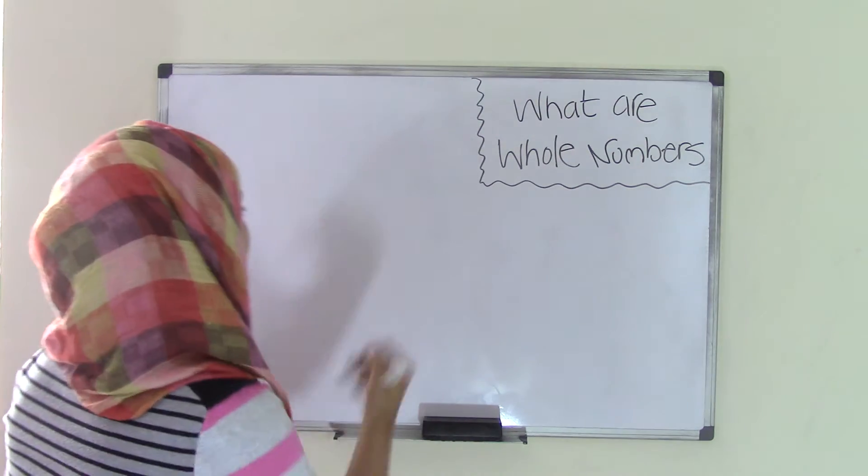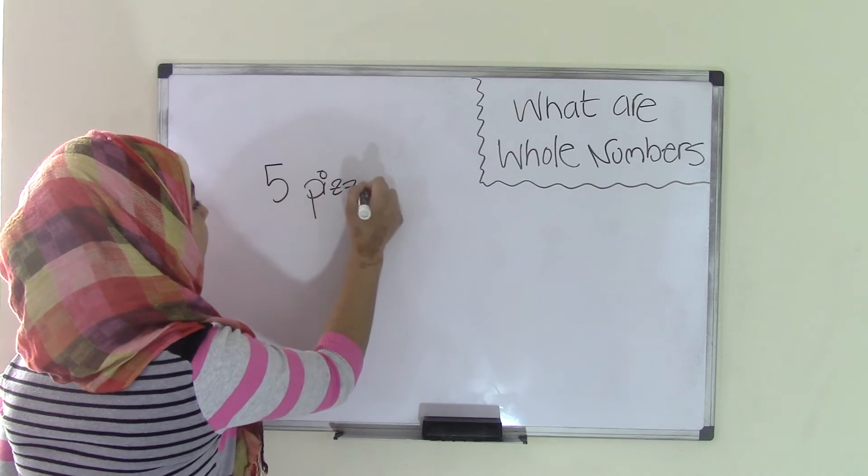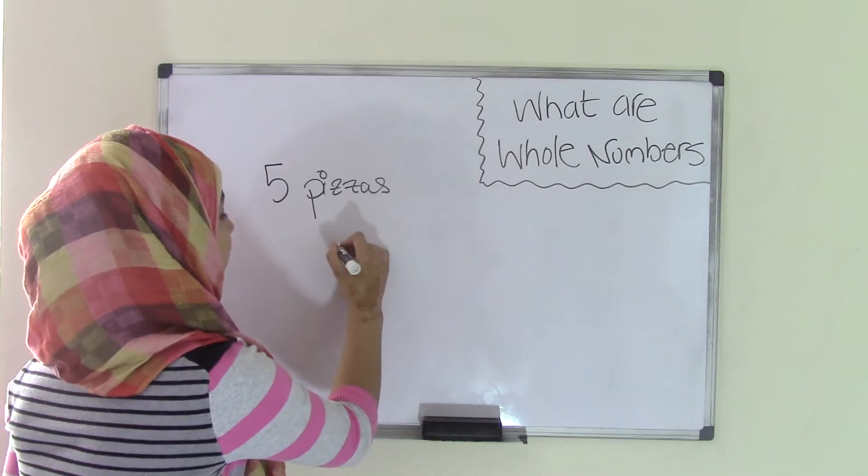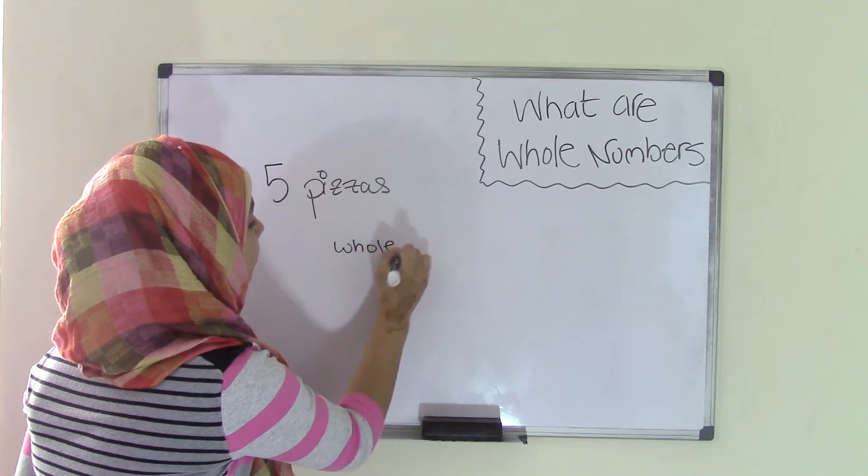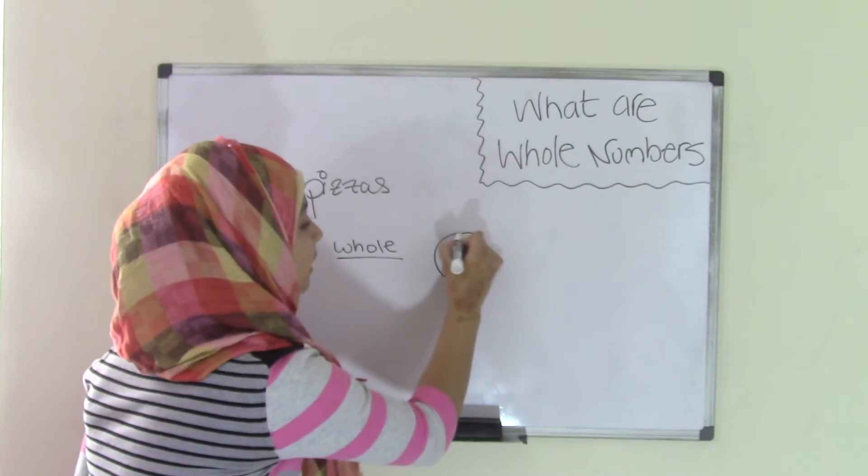So for example, if you had five pizzas, this would be a whole number. Reason is because you have five whole pizzas. And whole means not a part but exact whole. So this would be a whole pizza.